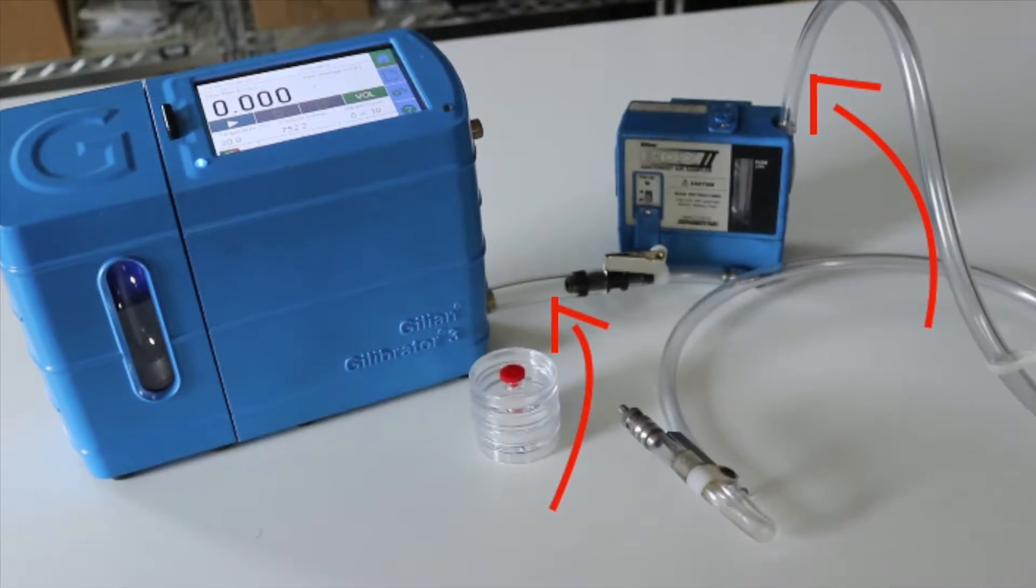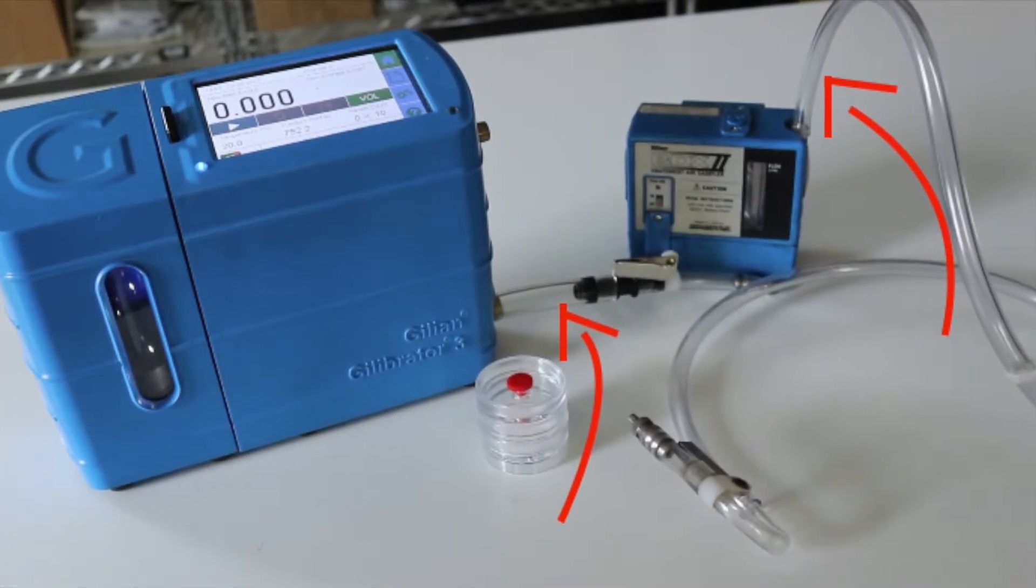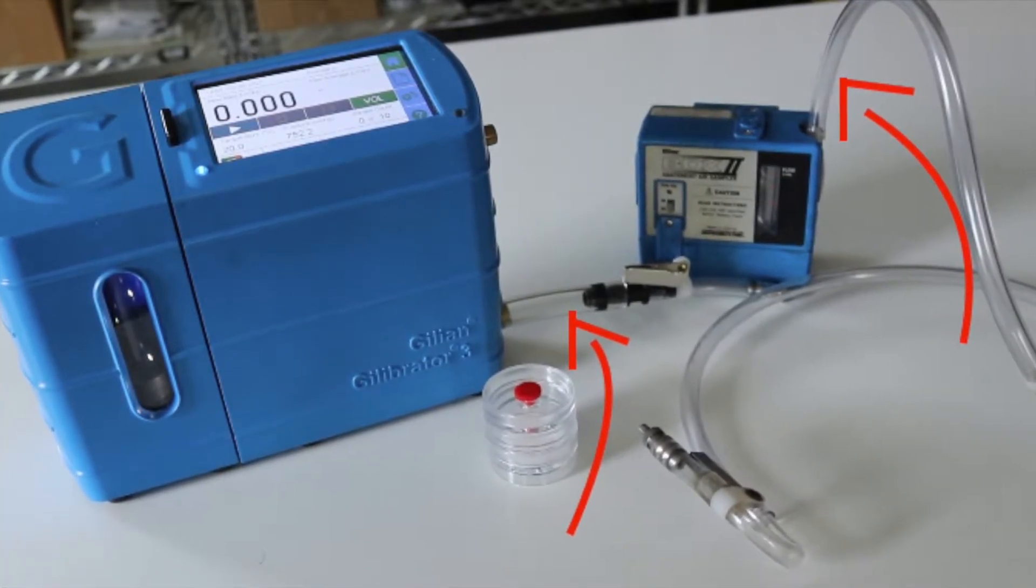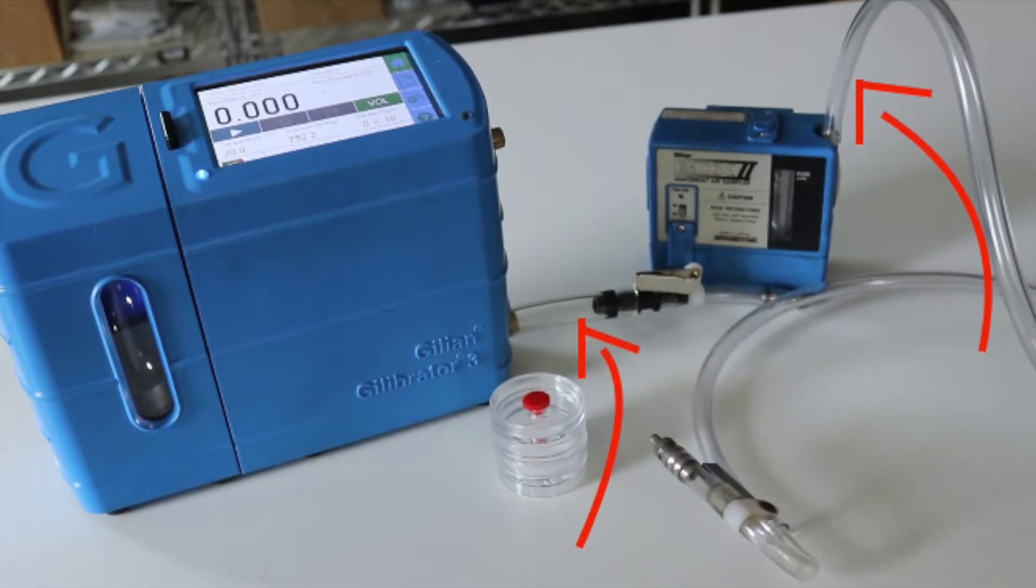At this point, you should have the calibrator connected to one flexible tube and the sampling pump connected to another flexible tube.